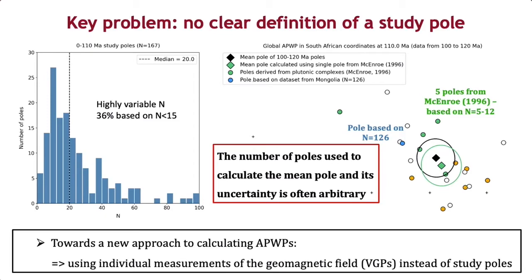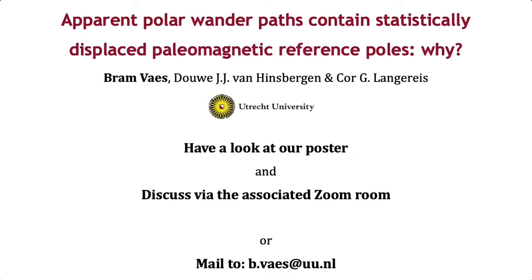For this reason, we are currently working on a new approach to calculating APWPs, using the individual measurements of the geomagnetic field rather than study poles. This allows us to give more weight to larger datasets, and to take into account uncertainty in both age and the data itself, in order to compute a unique APWP.